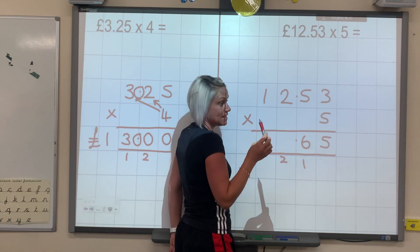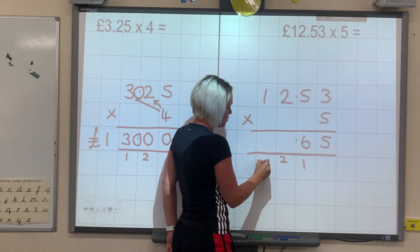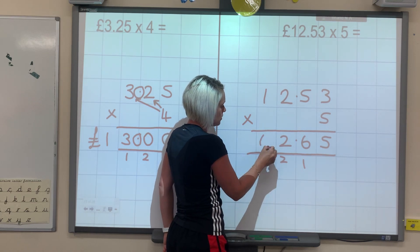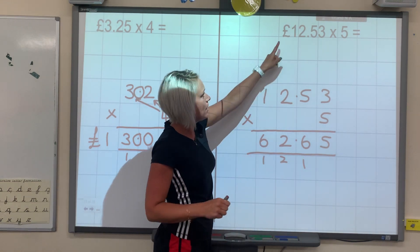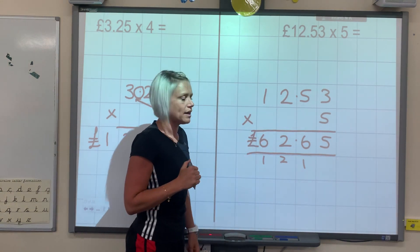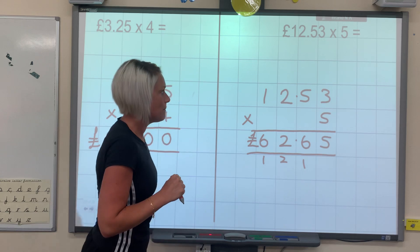Next one. 5 times 2 is 10. Add 2 is 12. And then 5 times 1 is 5. Add 1, 6. Check my unit. Pounds. So 62 pounds 65 pence.